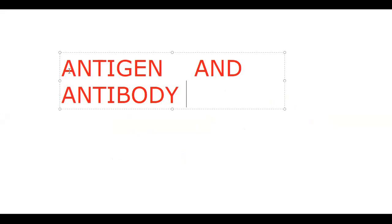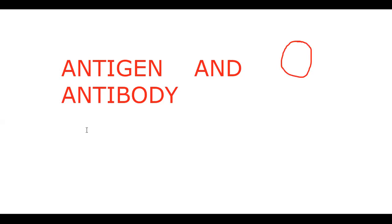We know what an antigen is and what an antibody is, but let's take a quick look. Whatever foreign body enters — a microorganism, a fragment of the microbe, a part of the microbe — we call it an antigen. Then, whatever we produce from the B-lymphocytes in response to that antigen, we call it an antibody, as we learned in immunology.